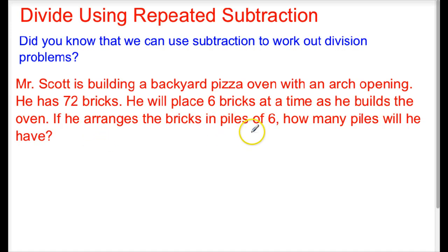Some information that we need to look out for is always the question we are trying to answer. How many piles will he have? He has a total of 72 bricks and this will represent our dividend.